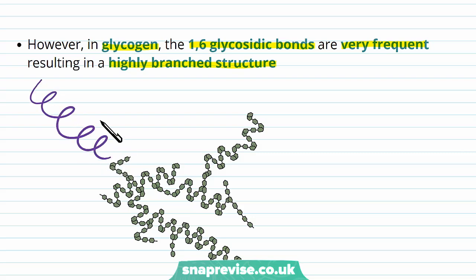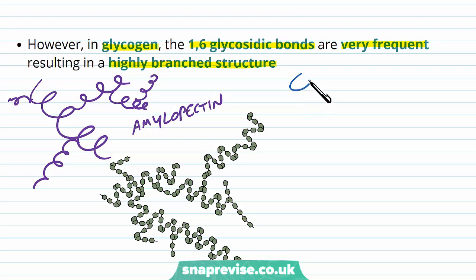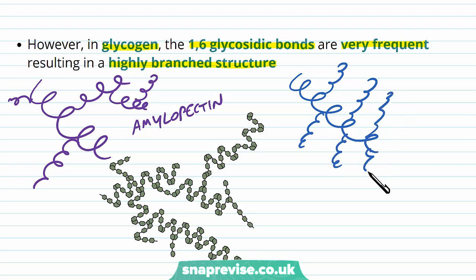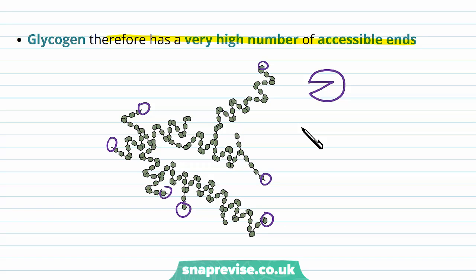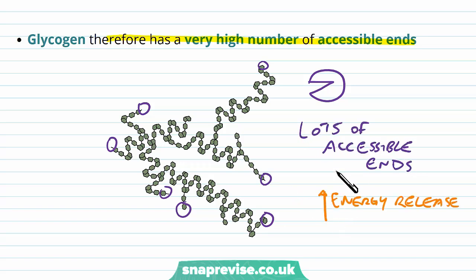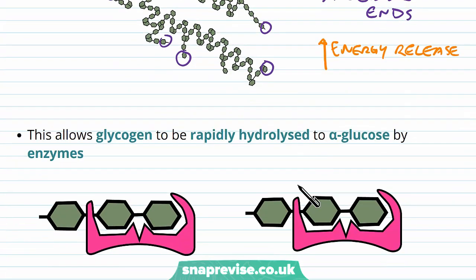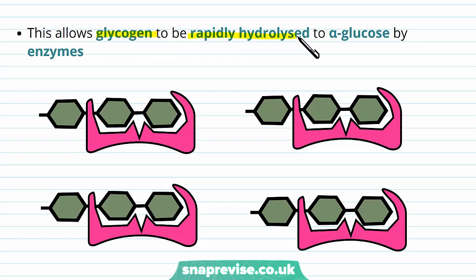Amylopectin had the main helix with branches coming off and the occasional branch on those too — so it did have lots of branching but it was only occasional. Whereas with glycogen we've got the helix structure again but branching happens much more often and very frequently, and those branches will have branches frequently too. You can see it would be a very complicated, very highly branched molecule, so it has even more accessible ends for those enzymes to attack. The release of energy is therefore much faster compared to amylopectin, and by far compared to amylose. Glycogen can be rapidly hydrolyzed to alpha glucose by enzymes at lots of different points.